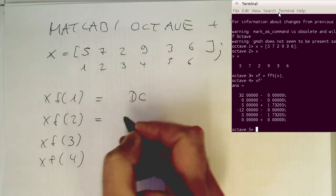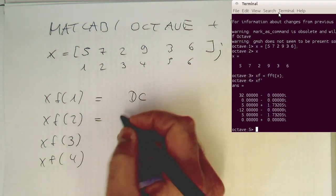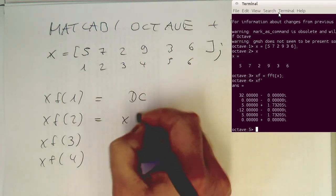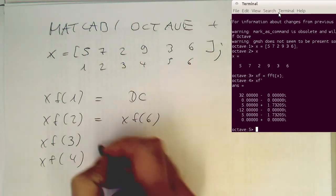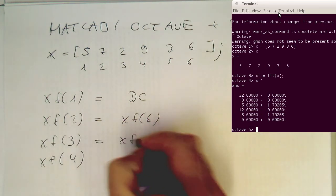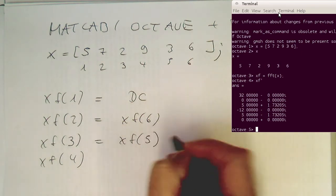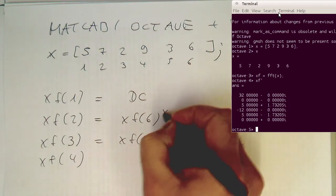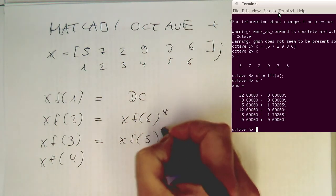So now we see that the XF of 2 is identical to the XF of 6 and then this is identical to XF of 5 here. Not identical, but that looks like the complex conjugate.